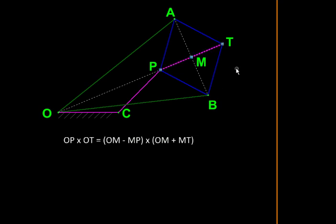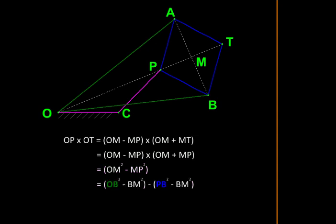PM and MT are equal and therefore we can make this substitution. So now it looks like the sum and difference product of two terms, which is nothing but the difference of their squares.